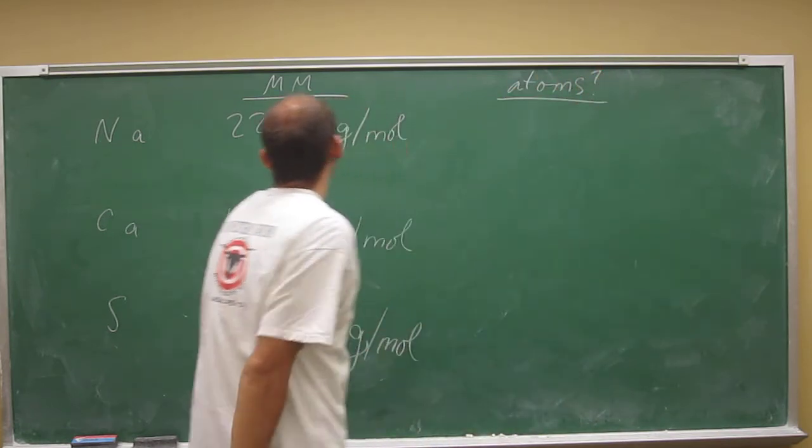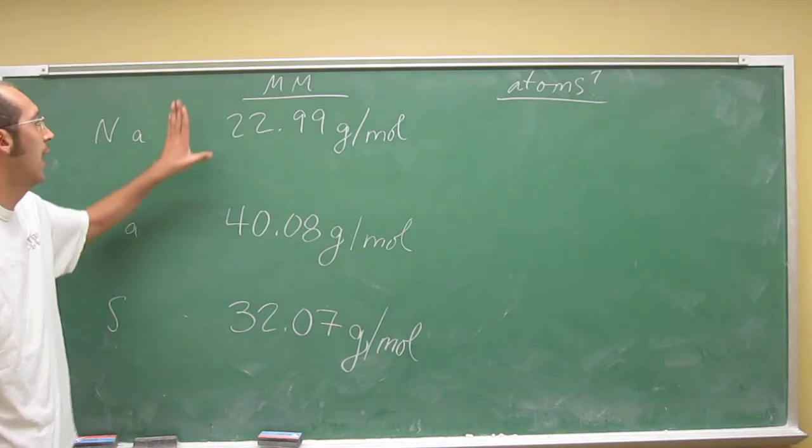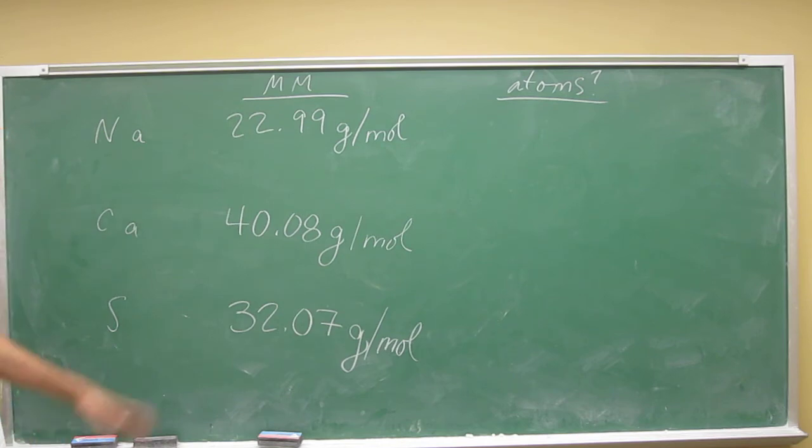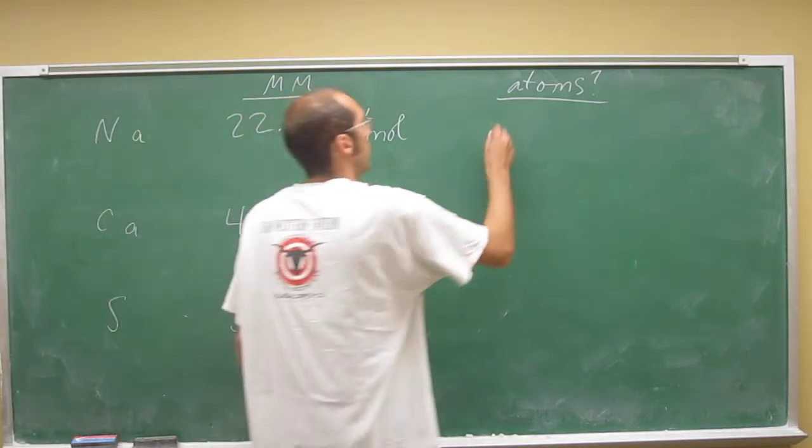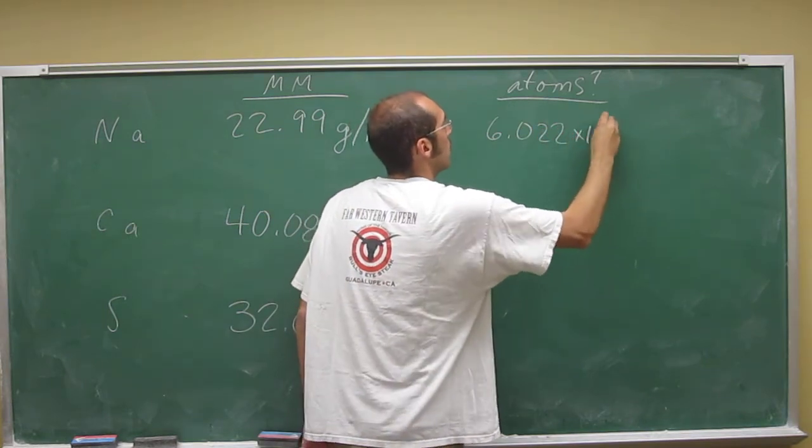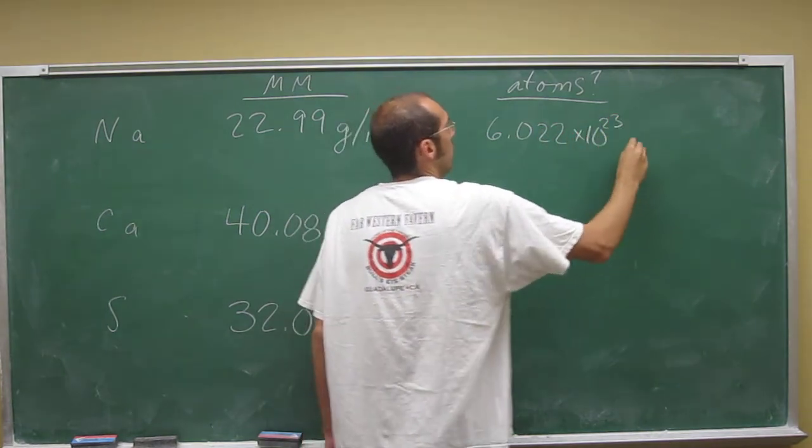How many atoms do you have if you've got one mole or 22.99 grams of sodium? Well, you've got 6.022 times 10 to the 23rd sodium atoms.